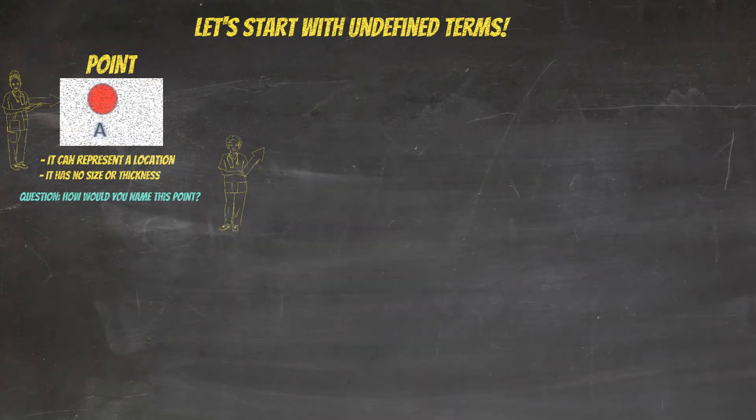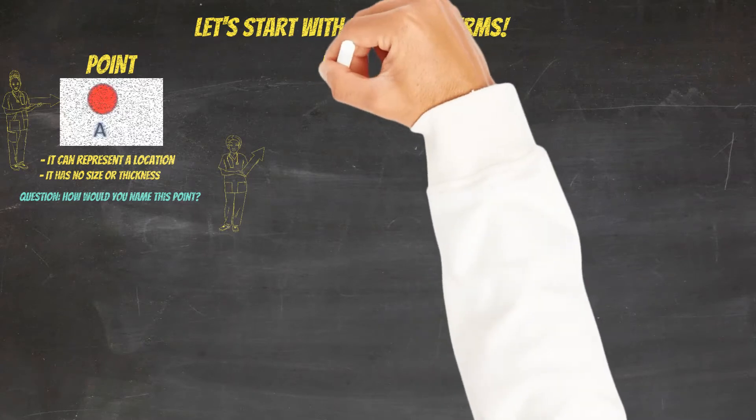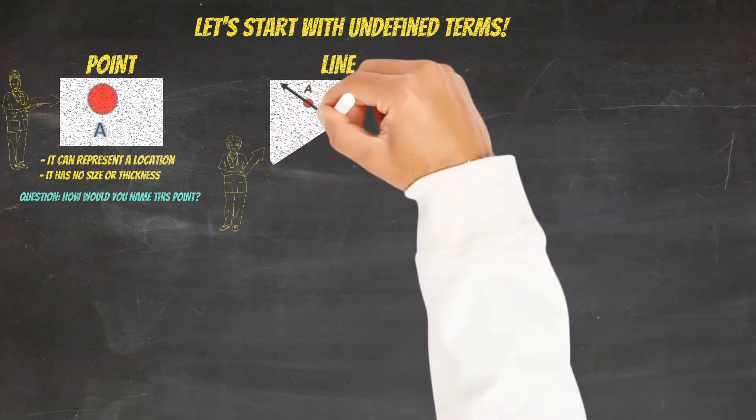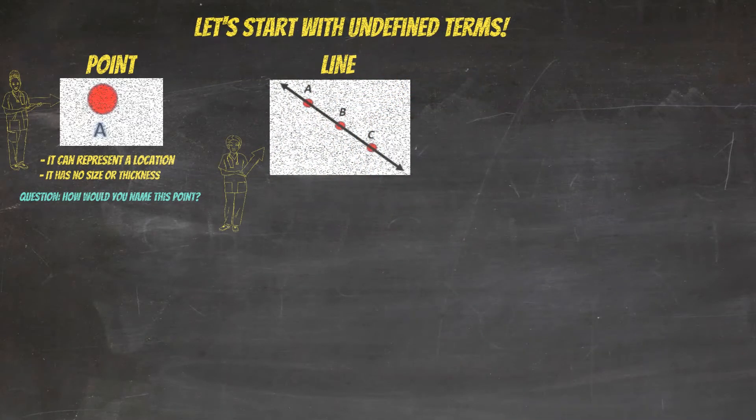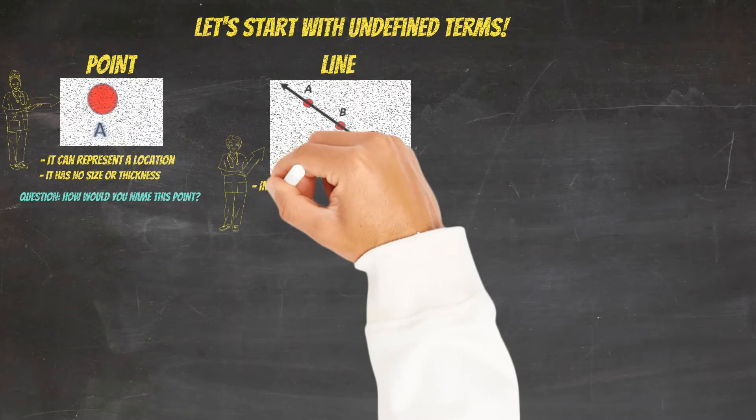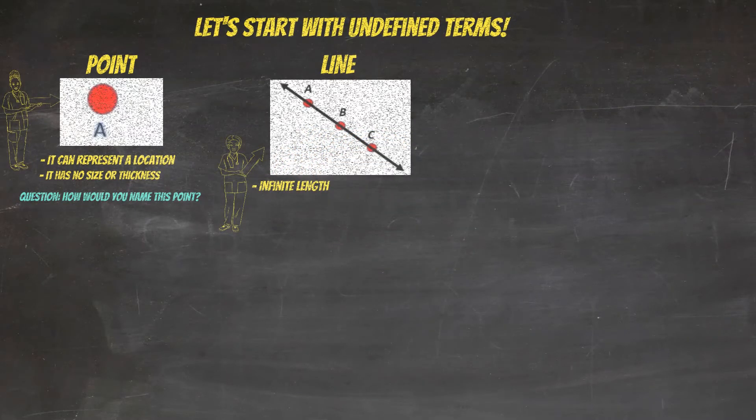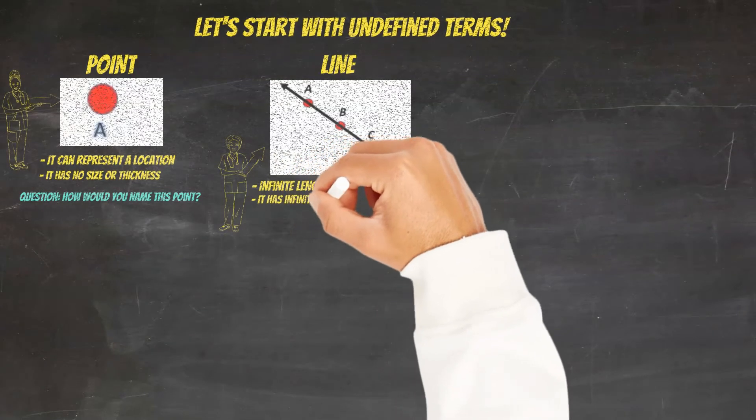And that term is a line. Here again is a description, a graphical description of a line. A line has infinite length, meaning it goes in opposite directions nonstop. It also has an infinite number of points.